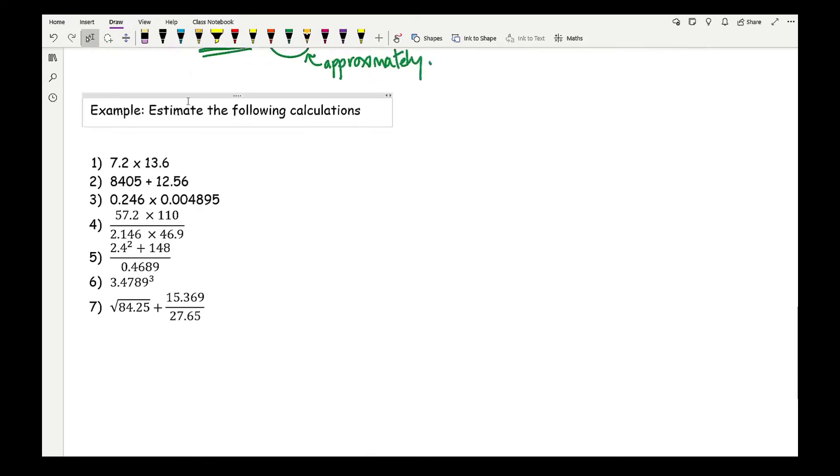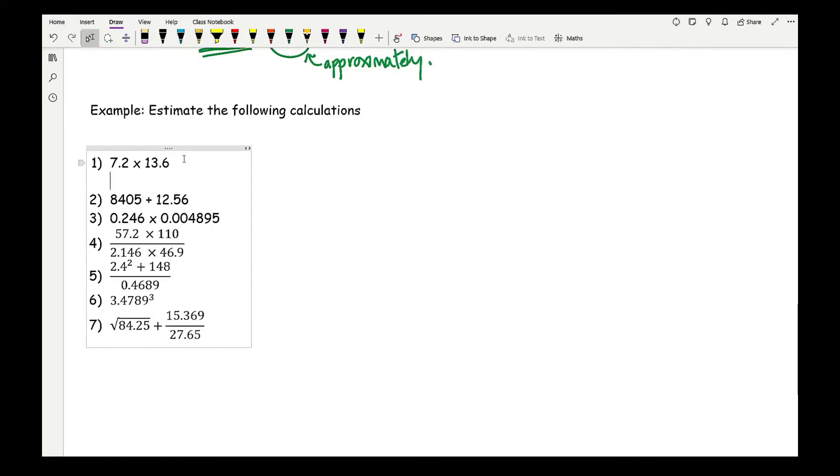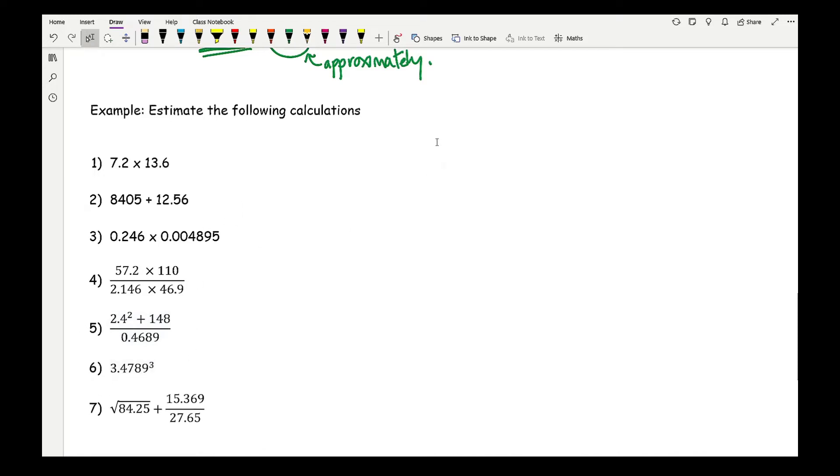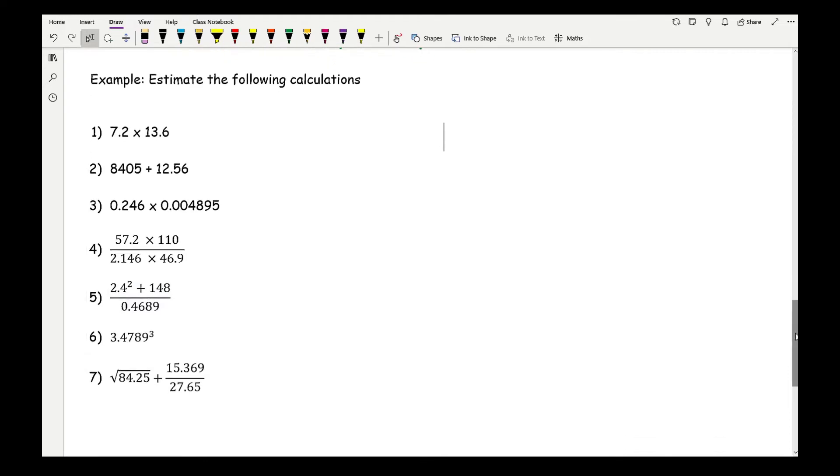Looking at question one, let me just create a bit of space between these questions. So looking at this, let's have a look at some of these questions then. As I said, the main rule when it comes to estimating is rounding to one sig fig. So what students would tend to do is they think, right, okay, well 7.2 is close to 7, which is fine.